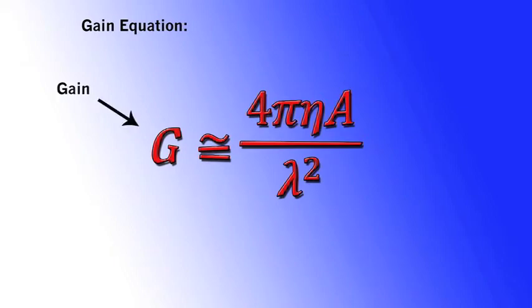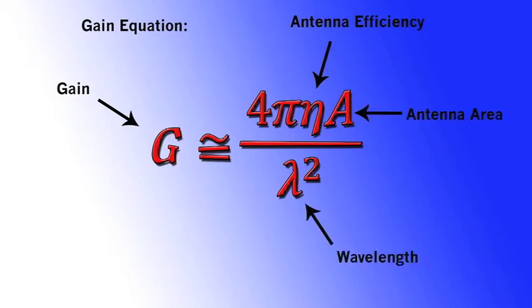Gain depends on a number of factors including the antenna efficiency, physical size of the antenna, and the wavelength of the wave being transmitted. The wavelength is the key factor we're interested in. Notice the wavelength term is on the bottom of the gain equation, so a smaller wavelength means a higher gain.